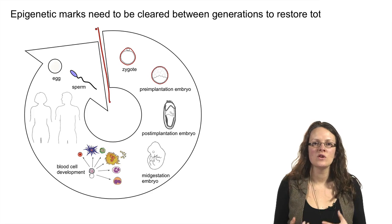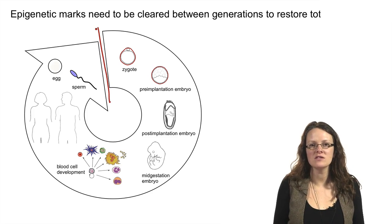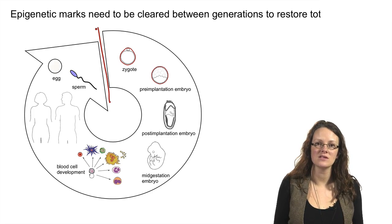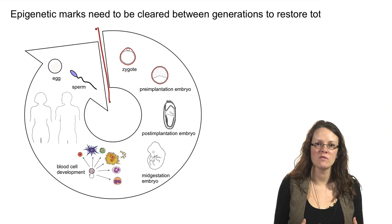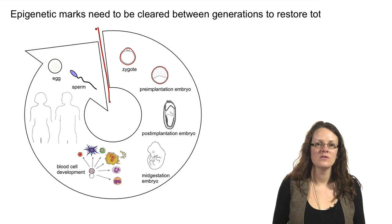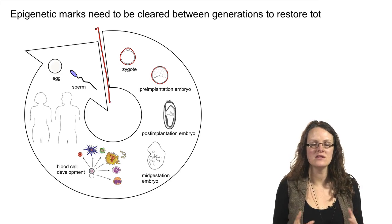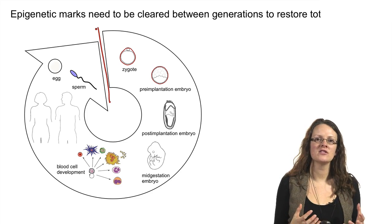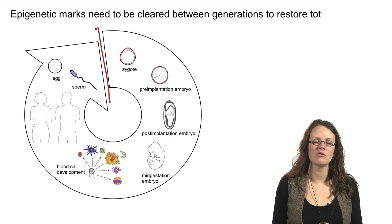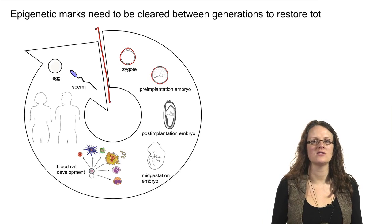We also know that sperm chromatin is different to other chromatin because it's not made up of histones. It's instead made up predominantly of protamines — a different type of protein that packages the DNA. So these differences in germ cell chromatin and the different gene expression signatures required need to be removed before the next generations can develop.